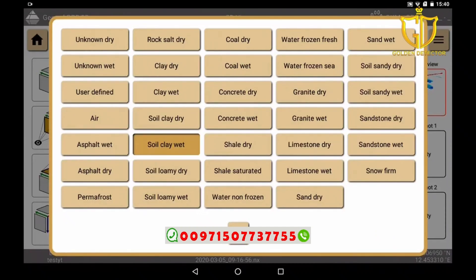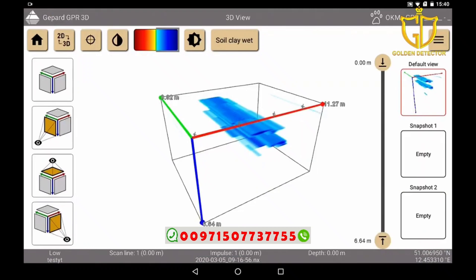Here we see a wide range of different soil types and we choose the one that best suits our case. For us it was clay wet soil. The better we determined our soil type, the better and more precise is the determination of the depth.